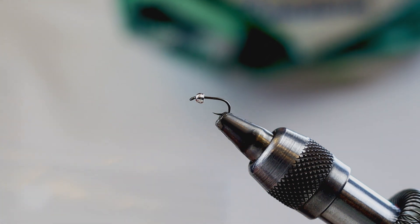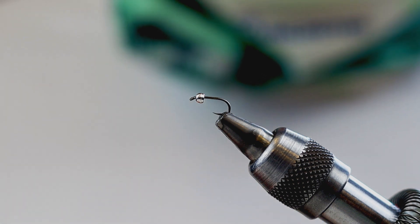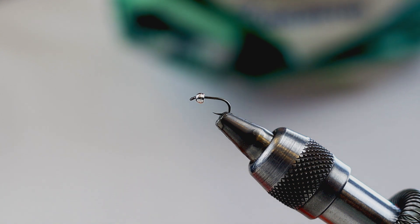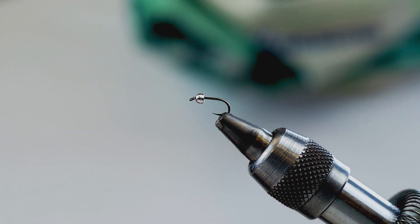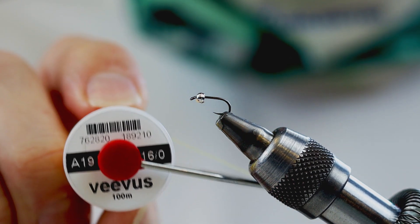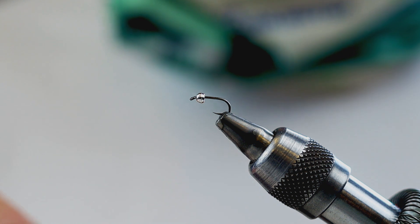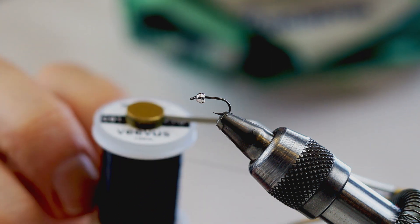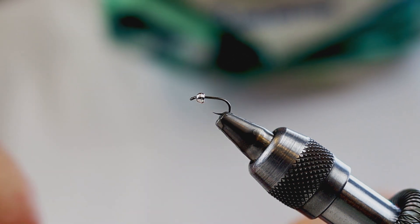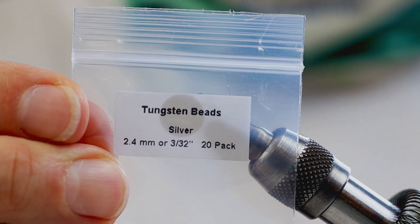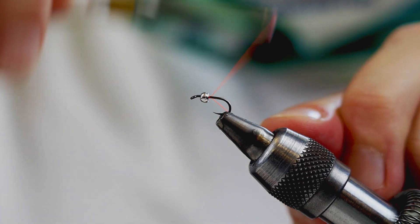For the tail, I'm going to use Cock de Leon. There will be three different threads I'm going to use. It'll be Vivo's 16-odd orange for the orange spot on the back. For the body, I'm going to use Vivo's 16-odd yellow. And to finish nearby the bead, I'm going to use Vivo's 12-odd black. I'm going to use also a tungsten silver bead on this one. The first step will be to build the hot spot nearby the tail.